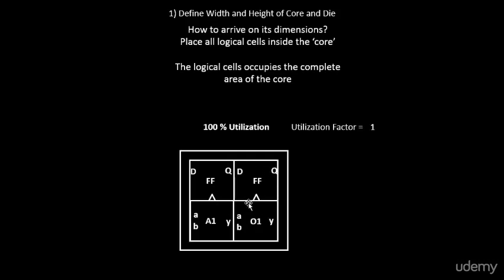The utilization factor is defined as the area occupied by the netlist divided by the total area of the core. Here, the area occupied by the netlist is 4 square units and the total area of the core is 2 × 2 = 4 square units, so the utilization factor is 1. A utilization factor of 1 means the core is completely occupied and no extra cells can be added. In practice, we ideally go for 50–60% utilization, giving a utilization factor of 0.5 or 0.6.